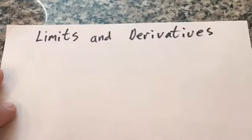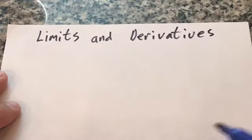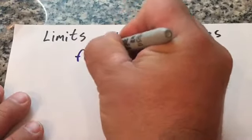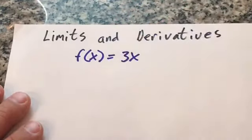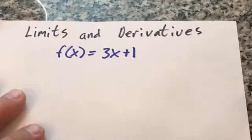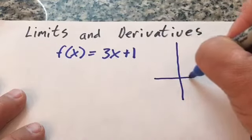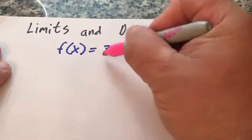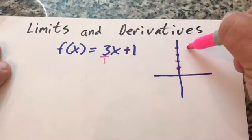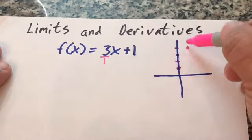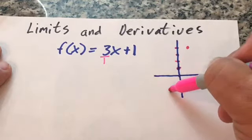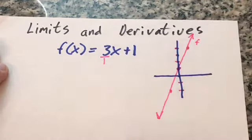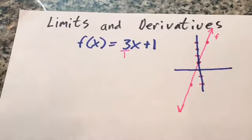More limits and derivatives — this one's going to be more basic, so it might actually seem a little more difficult for some reason. This time I'm going to do y equals 3x plus one. I can graph that: starting at positive one on the y-axis, going up three over one — slope of three over one — and that's what my f of x looks like. I'll start with limits on this one.